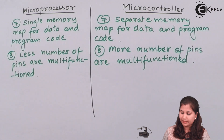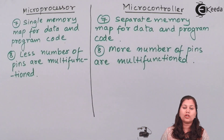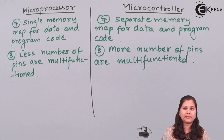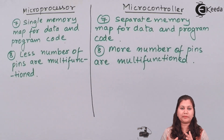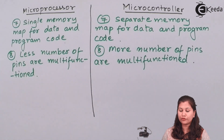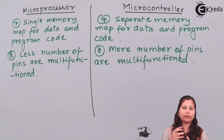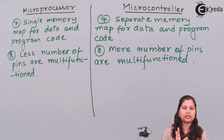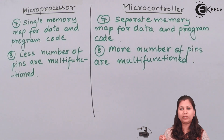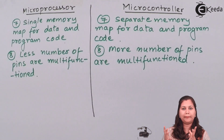The next difference is in terms of applications. Microprocessors are used for big or complex applications because they require more hardware and have a high designing cost. Whereas microcontrollers have a very low designing cost and are used for single tasks only — in an application where a specific task is to be performed by a device, we use a microcontroller. Microprocessors are used in bigger, more complex applications.